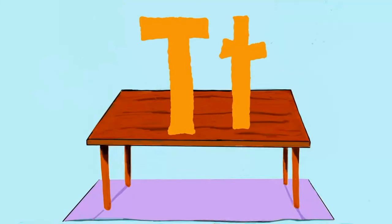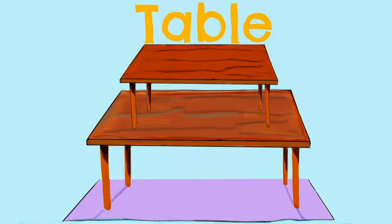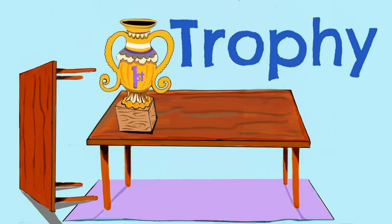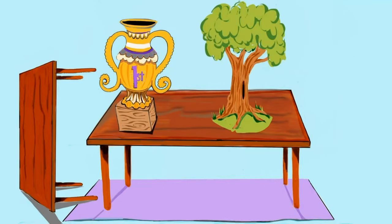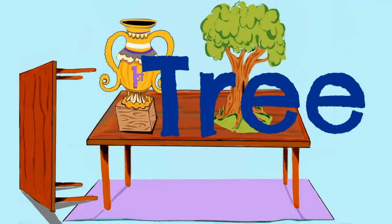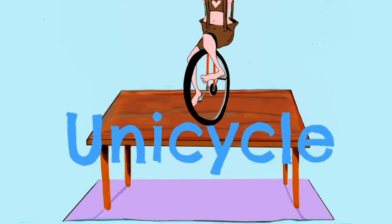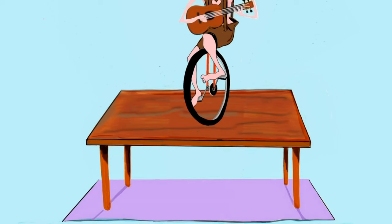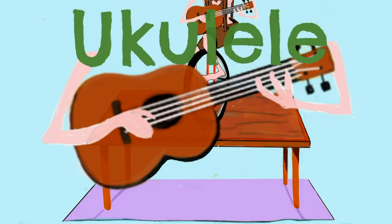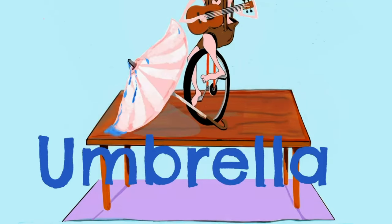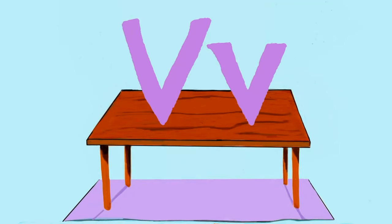The letter T for table. There's a trophy on the table and a tree next to the trophy. Next is the letter U — there I am on my unicycle on the table, trying to play the ukulele. And that's my umbrella for when it's raining out.